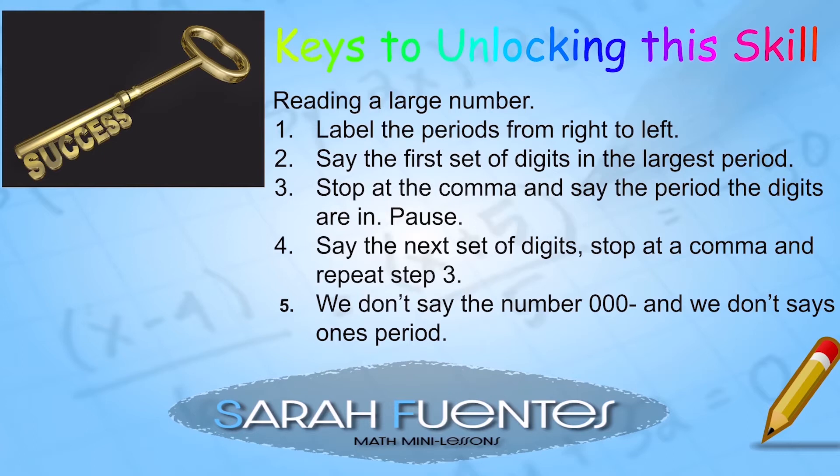Step four: I'm going to keep moving to the right and say the next set of digits, stop at the comma, and repeat step three. Five: we don't say numbers that have triple zeros, and we don't say the ones period. So if I have zero thousands, I don't say zero thousands, I just keep moving. And at the end of my number, I don't have to say ones, I just end.